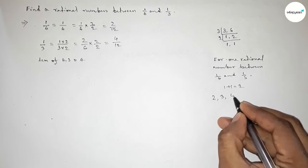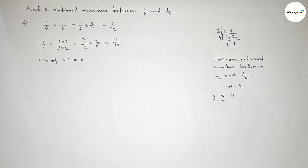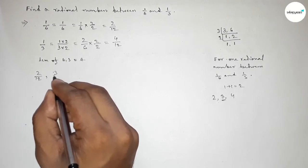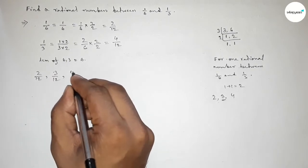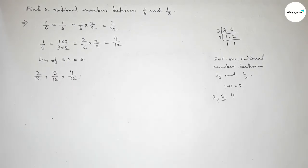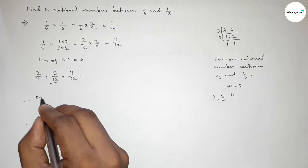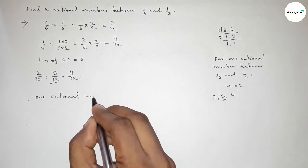Now between 2 and 4 we can get one natural number, which is 3. So now write down here all the fractions or rational numbers, and among these, this one is a required rational number between 1 over 6 and 1 over 3.